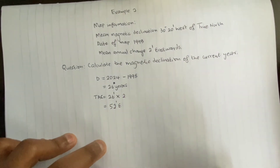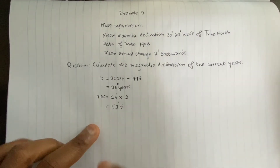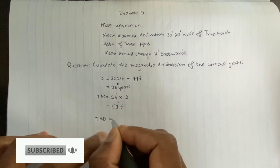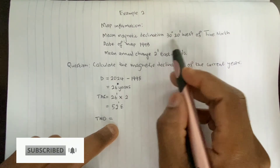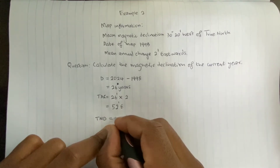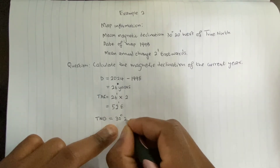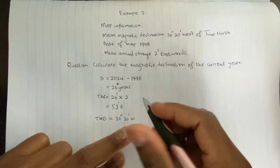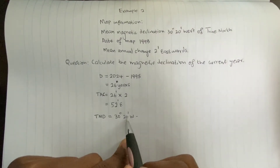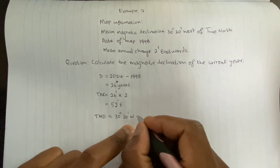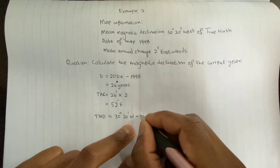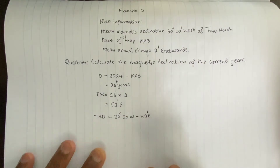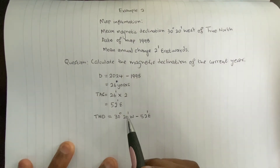The last step is to calculate the total magnetic declination, abbreviated TMD. This equals the mean magnetic declination of 30 degrees 20 minutes west of true north. Because I have different directions, I subtract: 30 degrees 20 minutes west minus the total annual change of 52 minutes east.